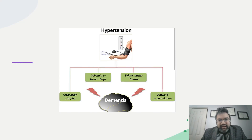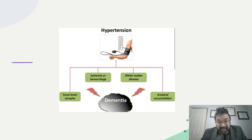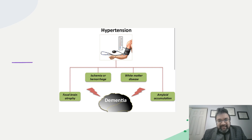Before I leave, I wanted to share a simple diagram showing a lot. How does hypertension cause dementia? Some of the causative pathways are focal brain atrophy, ischemia or hemorrhagic stroke, white matter disease — which if increased can cause dementia — and amyloid accumulation. These are four types of causative agents that lead to dementia if you have hypertension. Thank you for listening. See you next time.